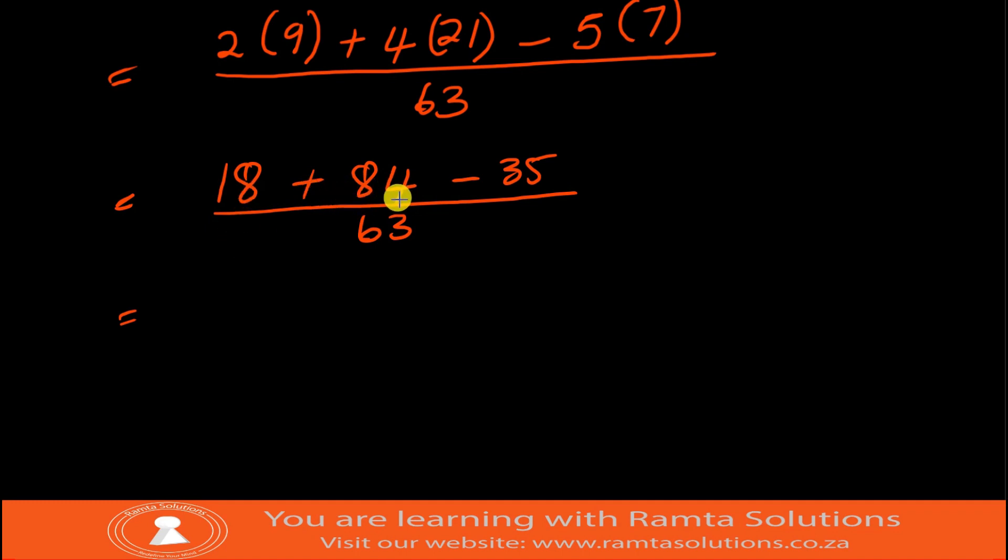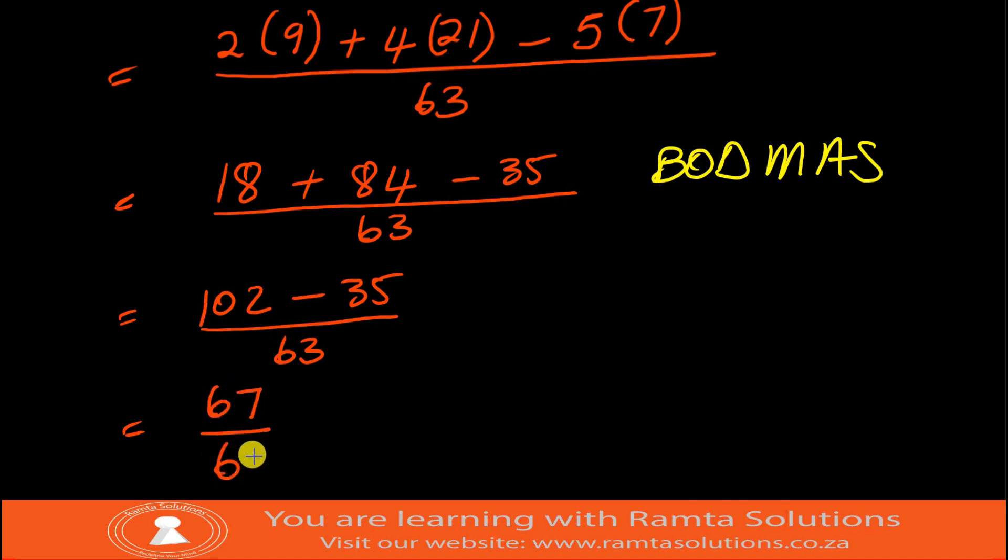What do we say? 18 plus 84 is 102 minus 35 over 63. Here we used BODMAS. Now 102 minus 35 is 67 over 63. Now go try it out on your calculator.